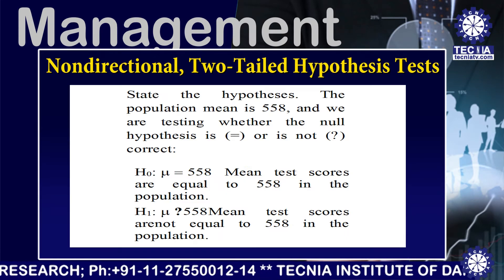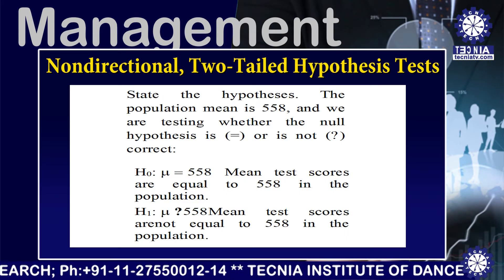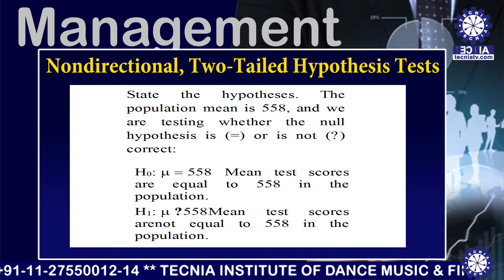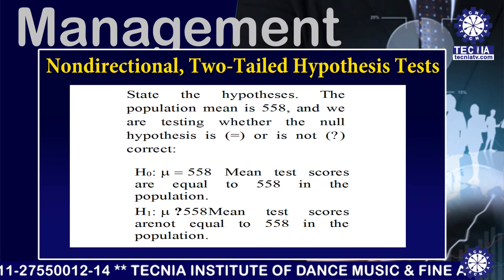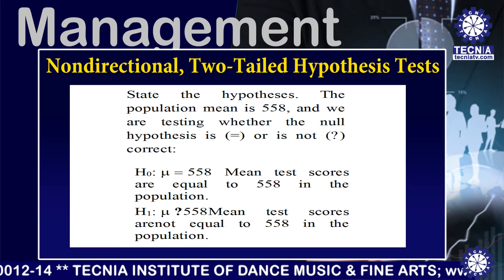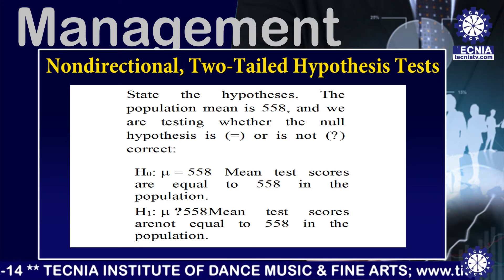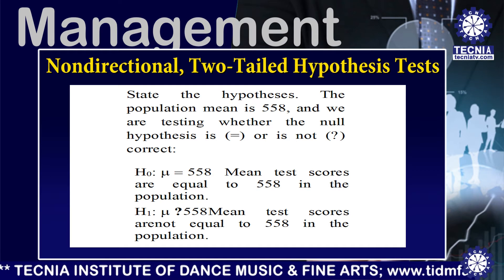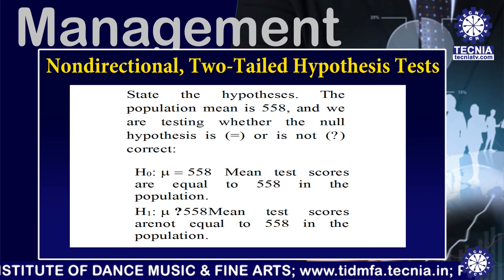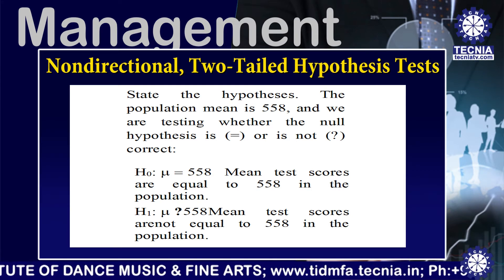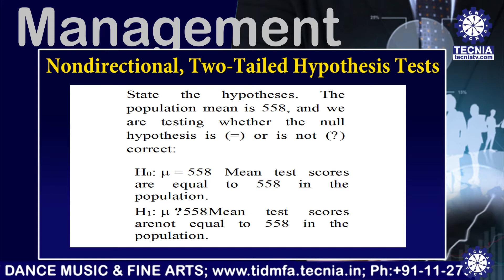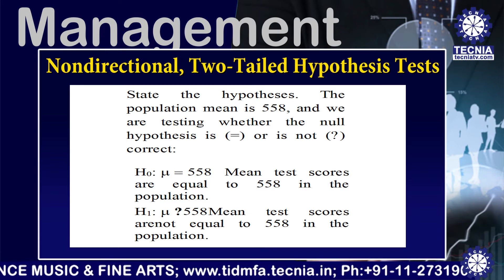There are certain steps to solve the hypothesis. Step 1 concerns stating the hypothesis. The population mean is 558 and we are testing whether the null hypothesis is or is not correct.